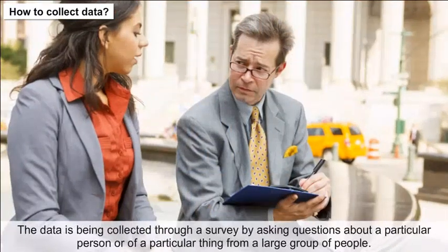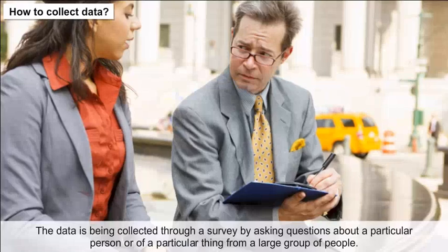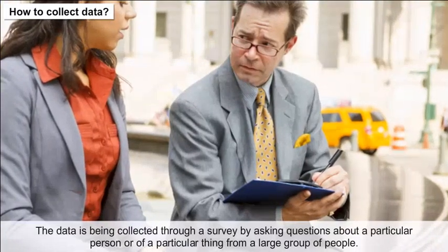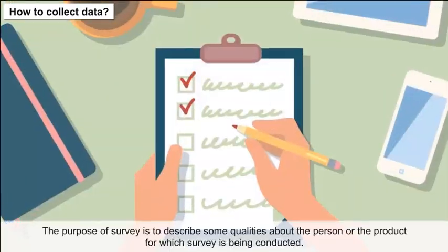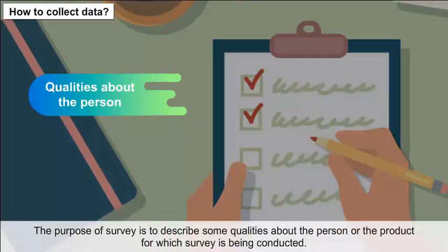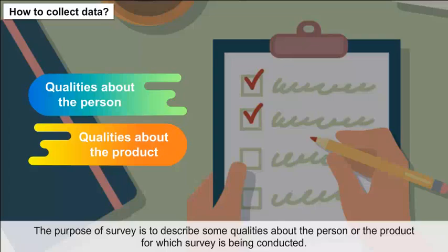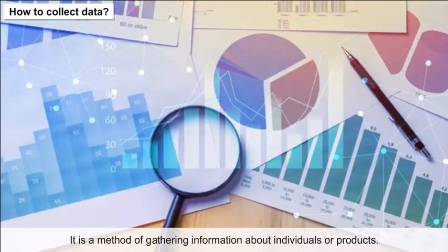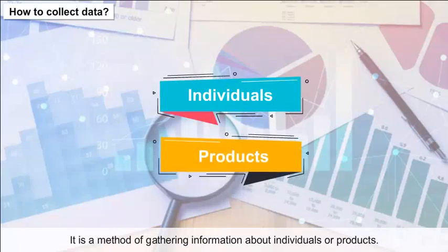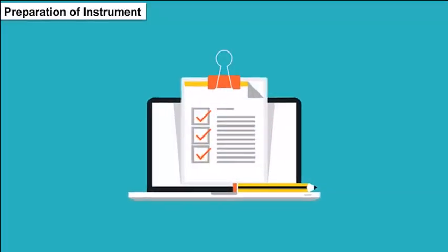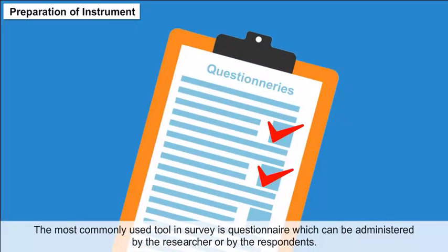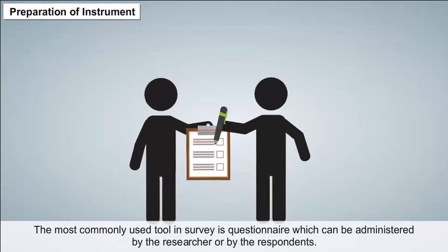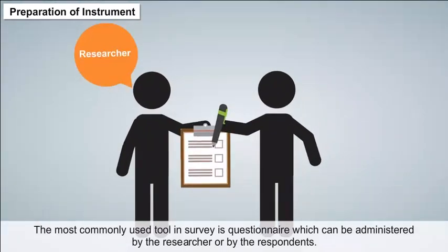Data is collected through a survey by asking questions about a particular person or thing from a large group of people. The purpose of a survey is to describe some qualities about the person or product for which the survey is being conducted. It is a method of gathering information about individuals or products. The most commonly used tool in a survey is a questionnaire, which can be administered by the researcher or by the respondents.